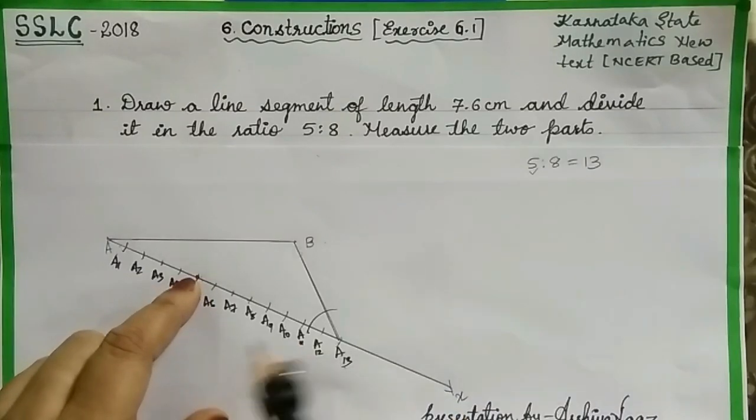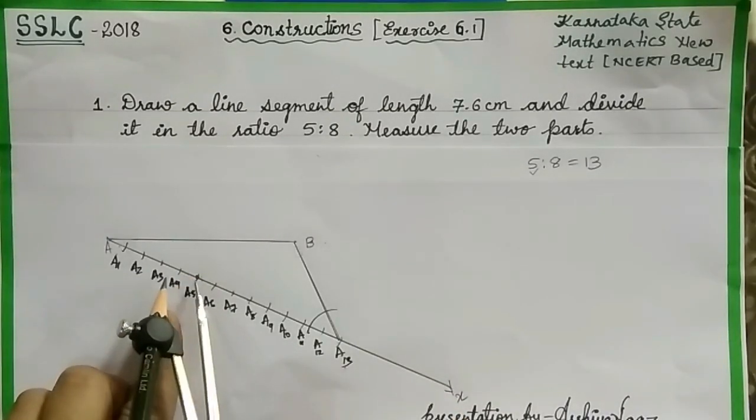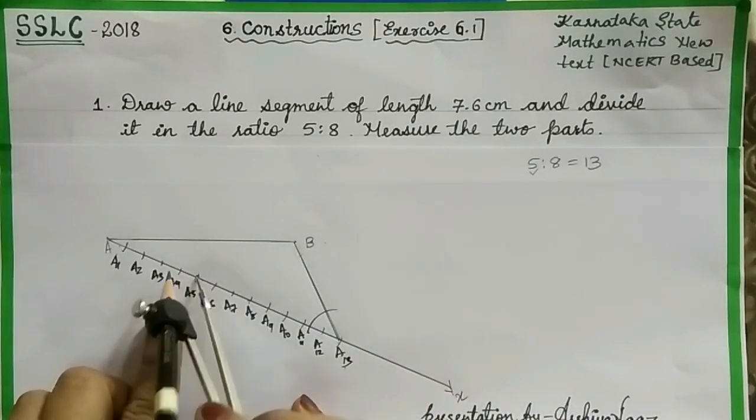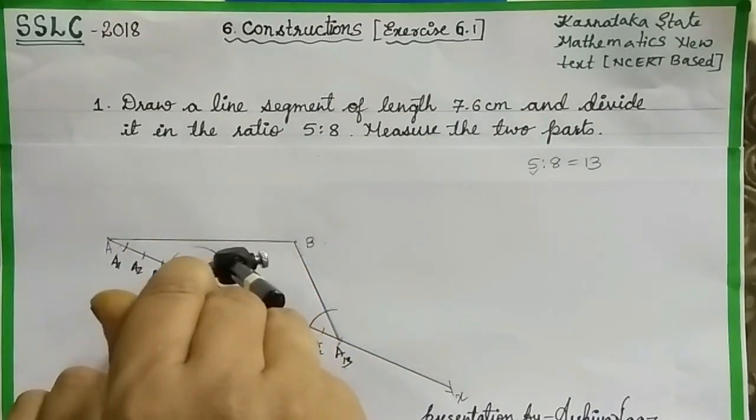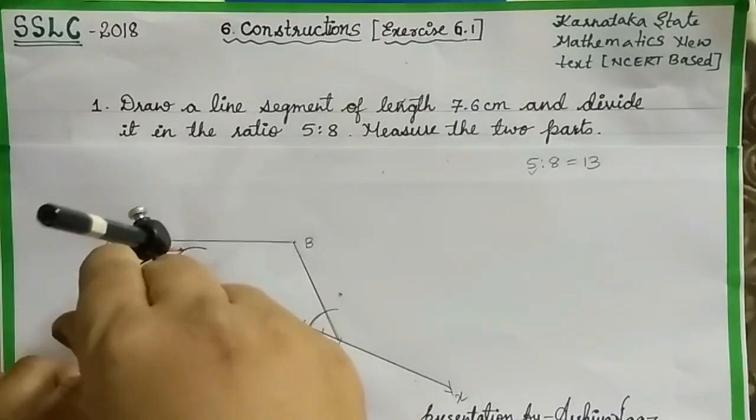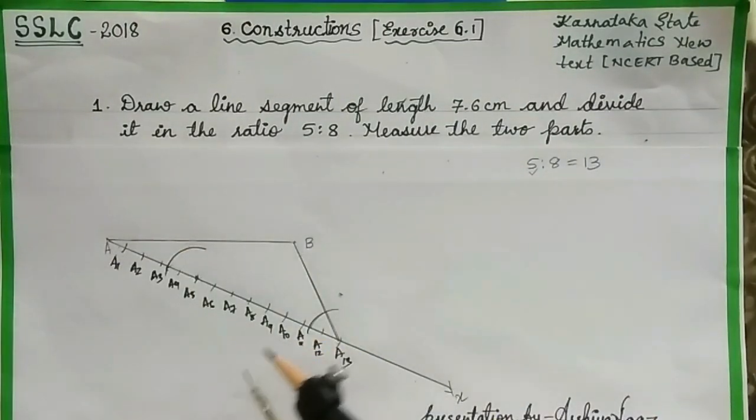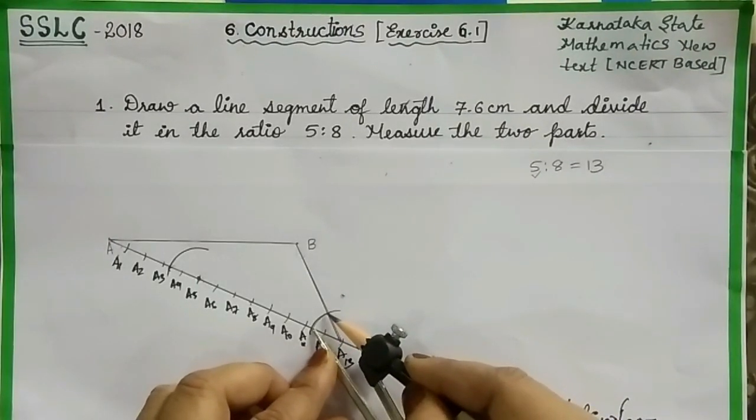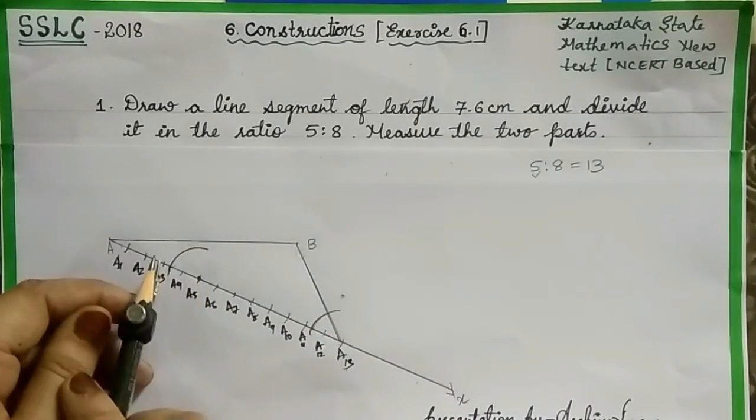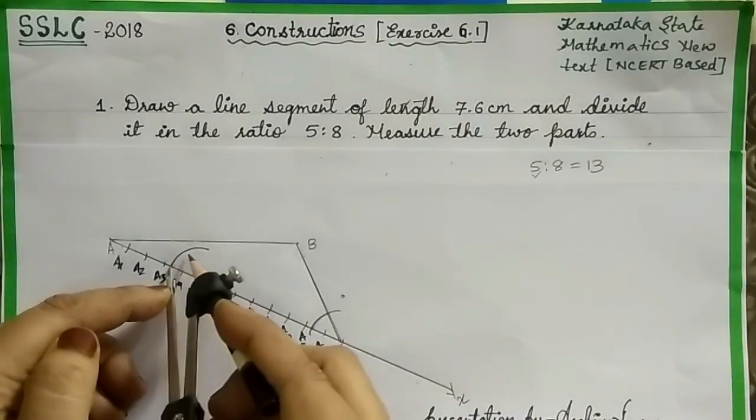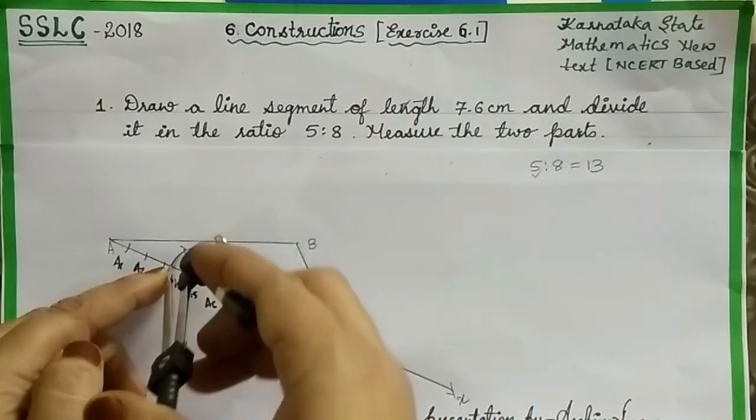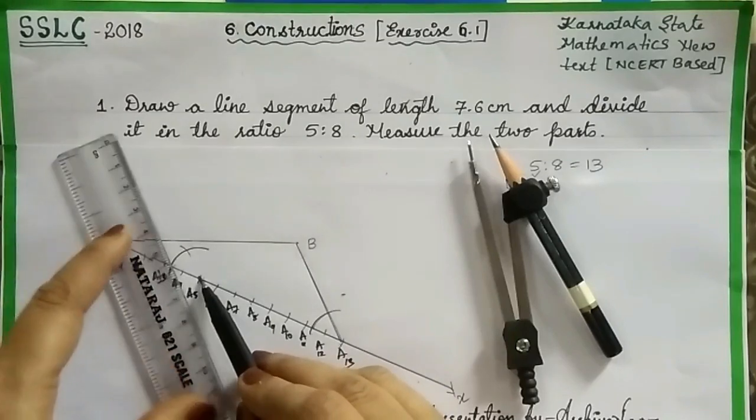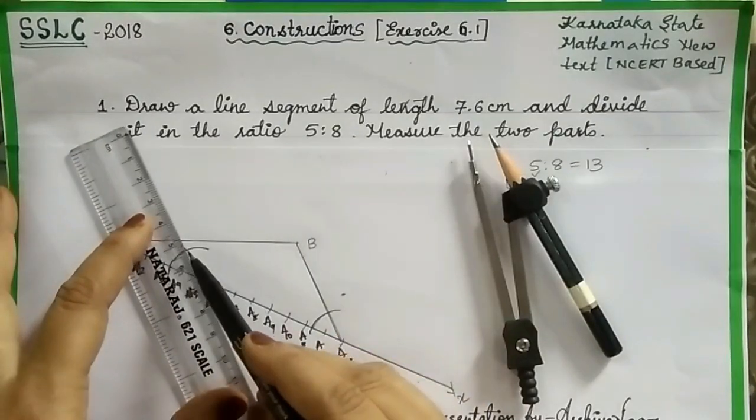So with A5 as center, with the same radius, draw another arc. Then measure the angle distance like this. Here also we want the same angle.